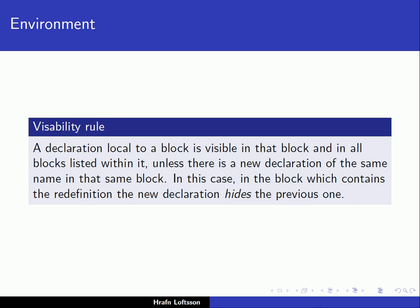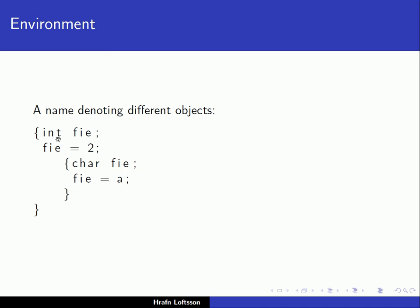An important concept regarding blocks and the environment is the visibility rule. A declaration local to a block is visible in that block and in all blocks nested within it, unless there is a new declaration of the same name in that inner block. If there is a redeclaration, the inner block hides the previous one.